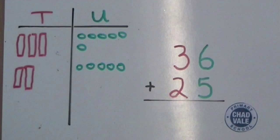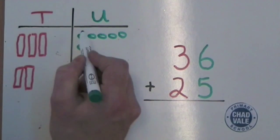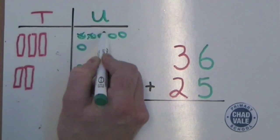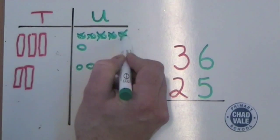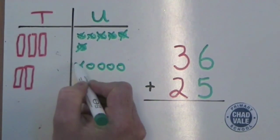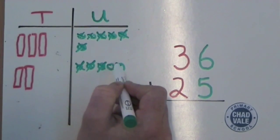Next we need to add six units to the five units and we cross them off as we count. One, two, three, four, five, six, seven, eight, nine, ten.